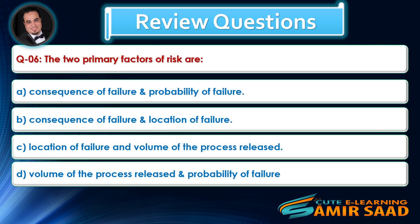Question number 6: The two primary factors of risk are? Answer is A.